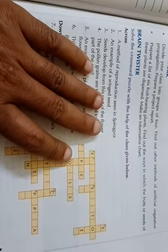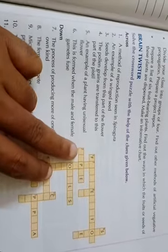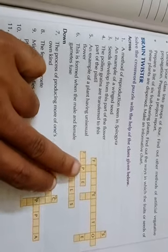In which method do we find reproduction process in spider? It will be number one, fragmentation. Then an example of winged seeds, an example of a winged seed. This one will be maple, M-A-P-L-E. So number two will be maple.